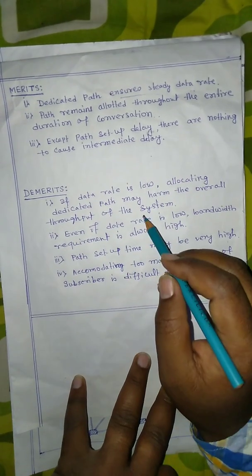Now for the demerits: the overall throughput is low because allocating a dedicated path harms the overall throughput of the system. If we have a dedicated path to communicate between A and B, all the nodes along that path are dedicated to those two subscribers for the entire duration of the communication, and cannot be used for any other communication simultaneously.